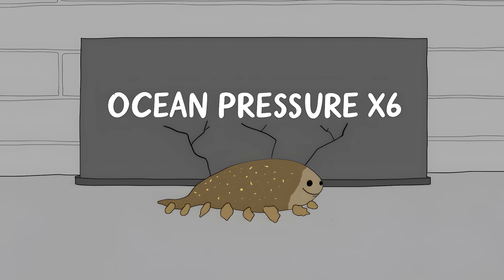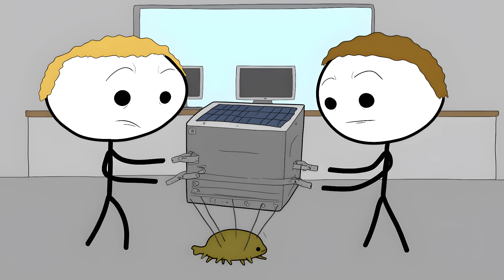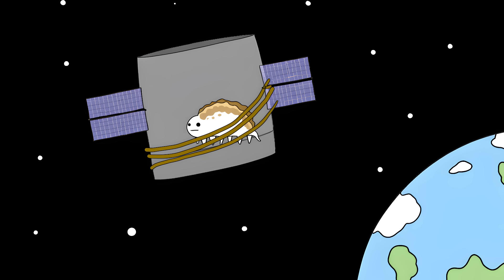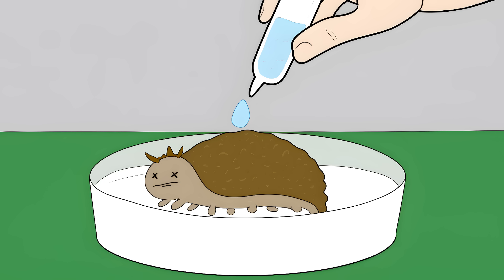In 2007, scientists strapped some tardigrades to the outside of a satellite. No spacesuit, no protection, just the raw vacuum of space for 10 days. When they came back, scientists added water and the tardigrades came back to life and started making babies. Their space babies were perfectly healthy.